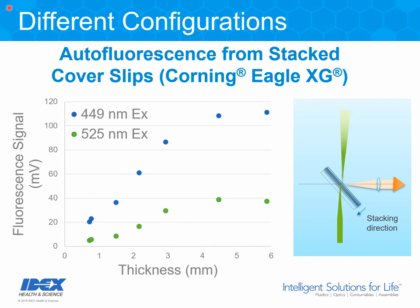Here are results for a sample configuration where the excitation beam is focused beyond the front surface of the sample, giving the measurement a little more sampling depth. The fluorescence signal in millivolts is plotted against sample thickness for two excitation sources: a 525 nanometer laser and a 449 nanometer laser, both with output powers in the range of 70 to 80 milliwatts. The cover slips are made of display glass, 0.7 to 0.8 millimeters thick, and sample thickness is obtained by stacking multiple cover slips. The results show that the sampling depth is somewhere between 3 and 4 millimeters, as that is where the signal levels off.